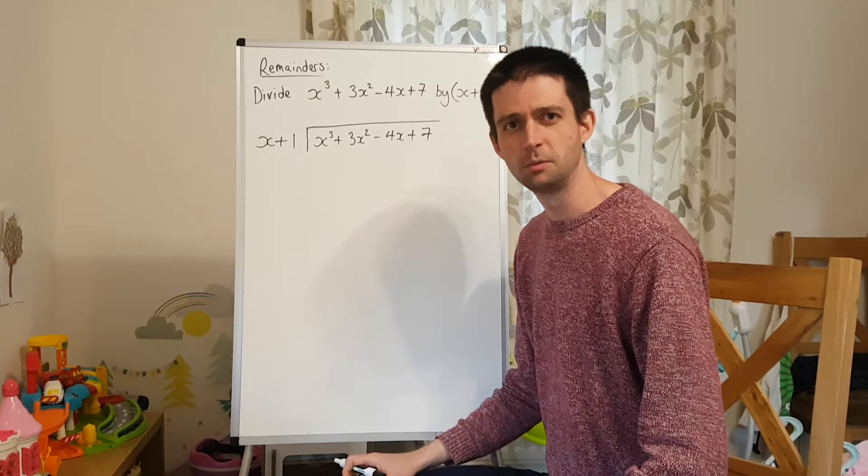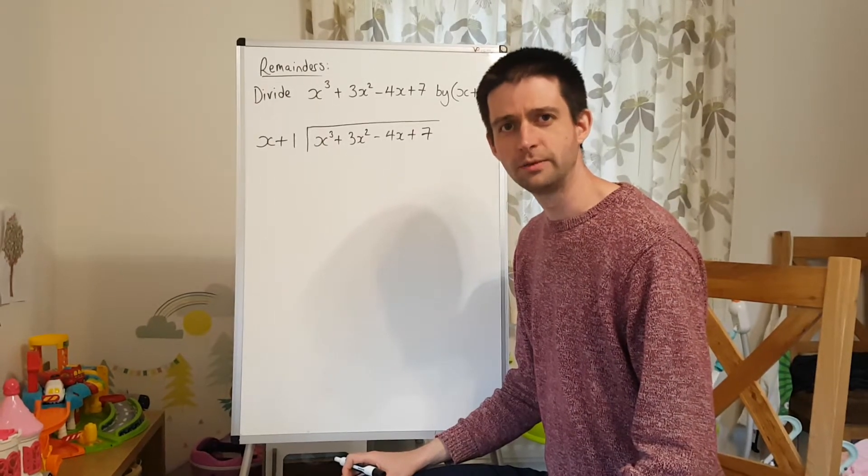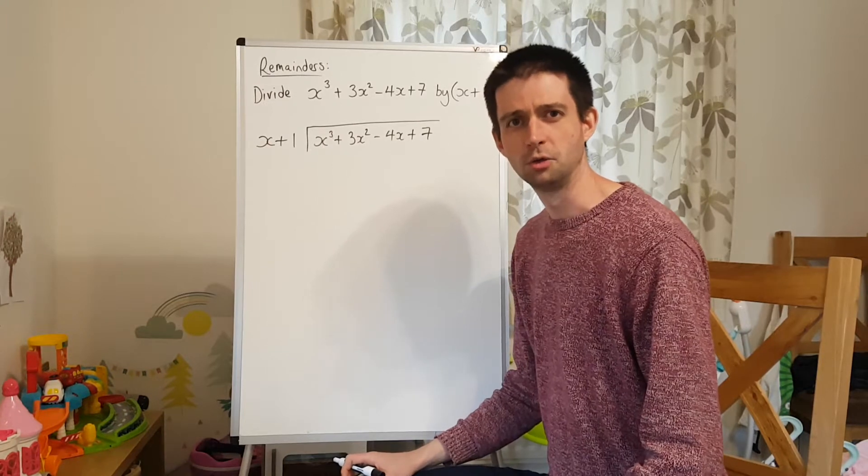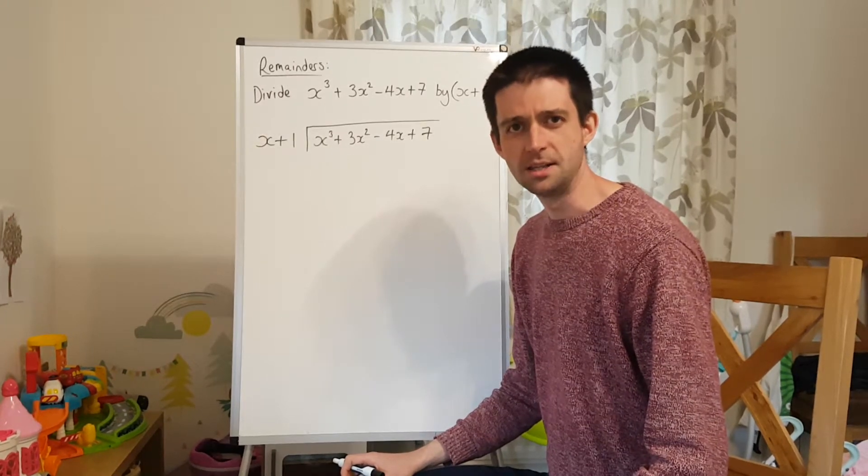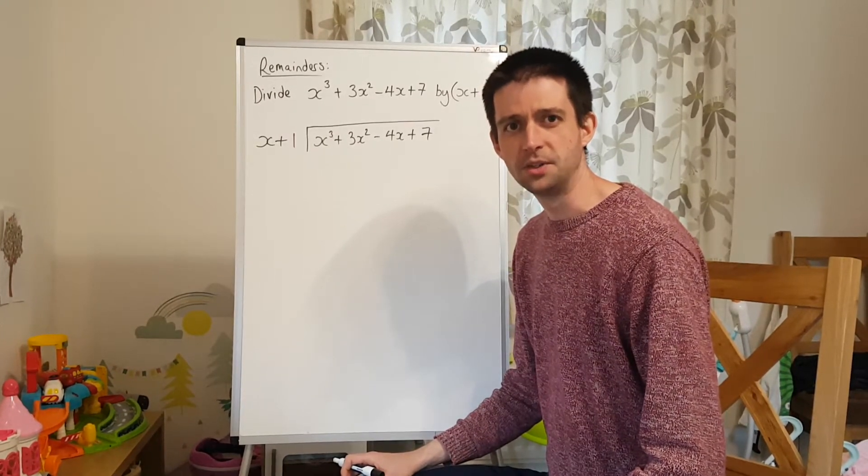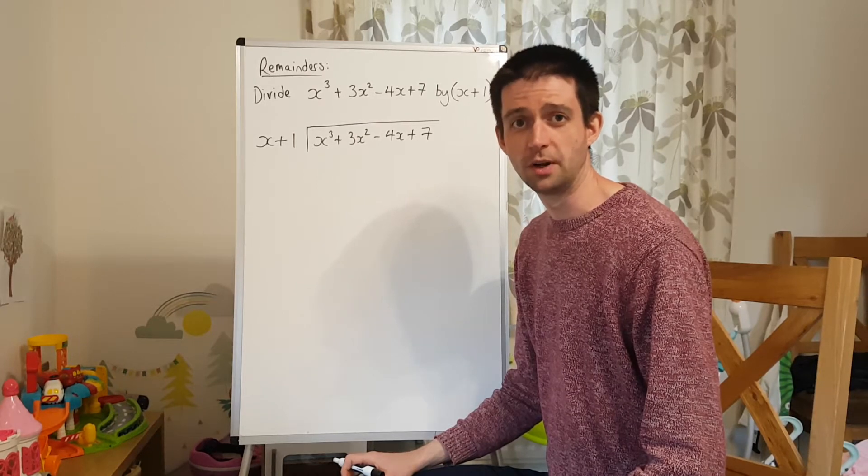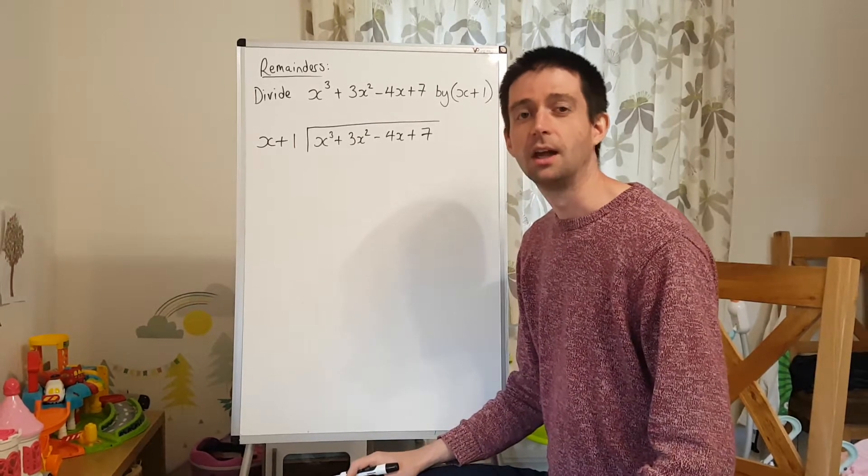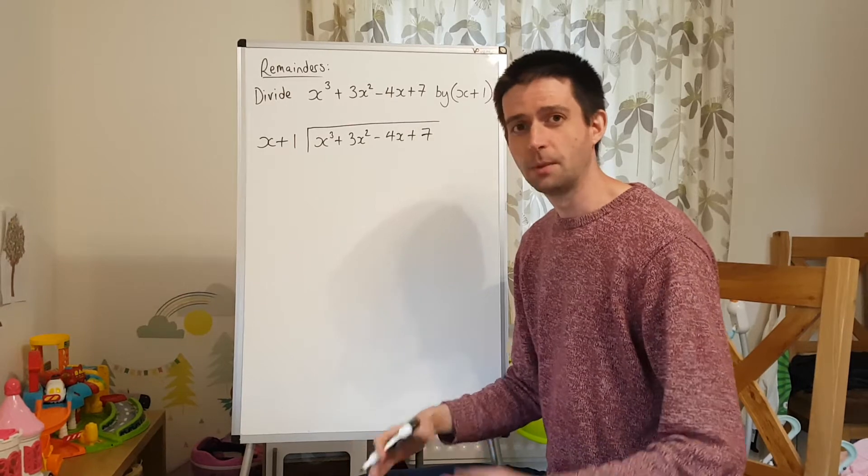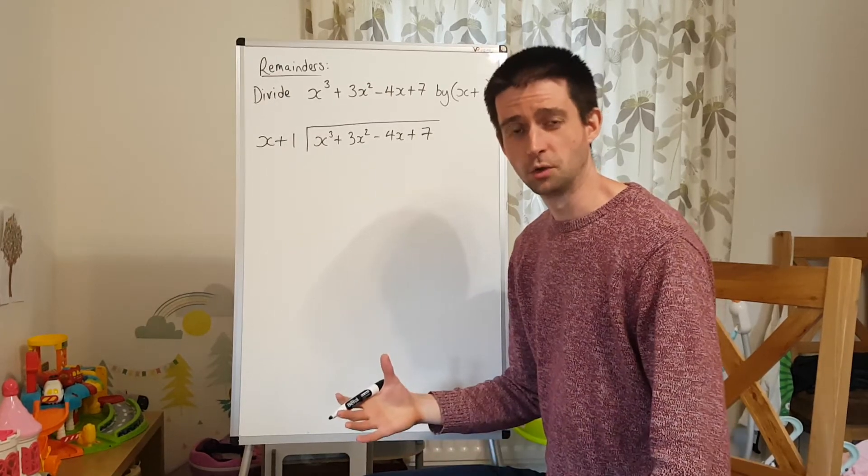Welcome back to Maths in an Empty Classroom with me, Mr Southern. This is part four of the lesson on algebraic long division. And what we're looking at in this part is what happens if the expression you're dividing by actually isn't a factor. Well, you get a remainder. That's okay. You can still do algebraic long division. It just affects how you write the result.